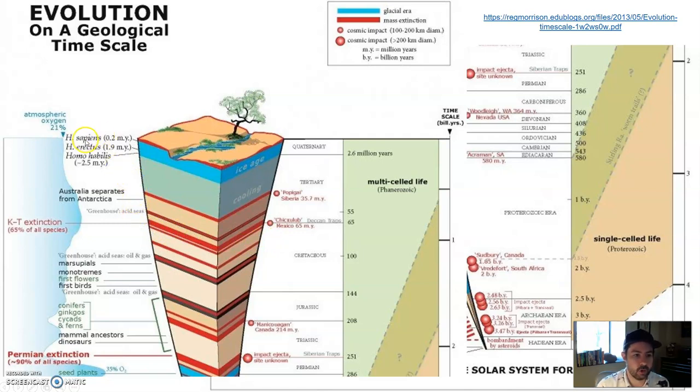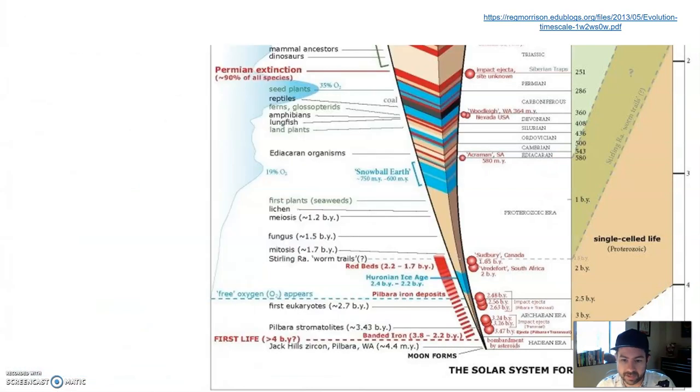Homo sapiens coming in right here at the end. So all the different red, those are different mass extinctions. As you can see, there's been a lot of them. There's a lot of stuff that happened in the past 4.5, 4 billion years. Earth's old. Earth is really, really old. Most people think a few thousand years old. That's nothing compared to Earth.